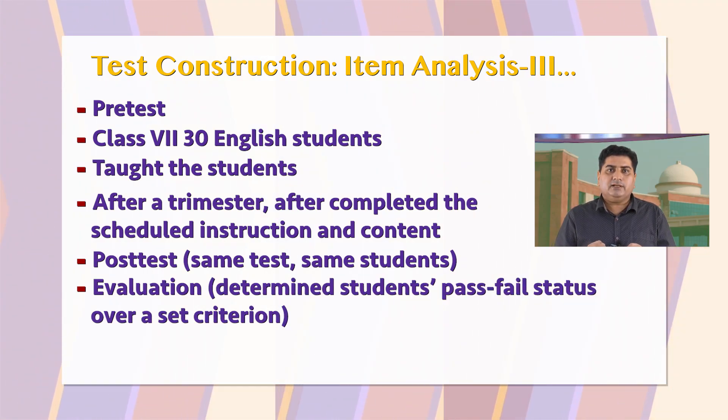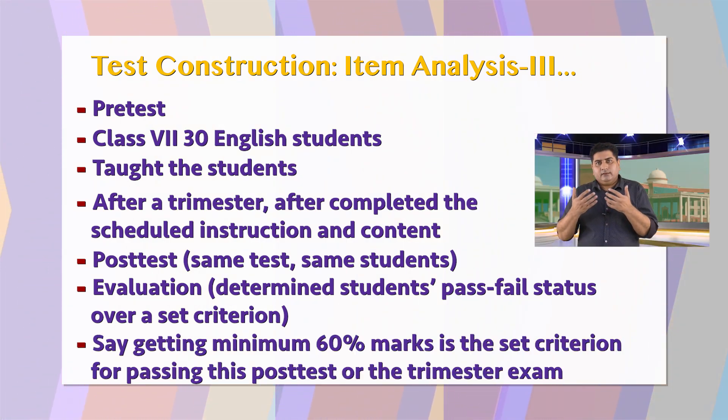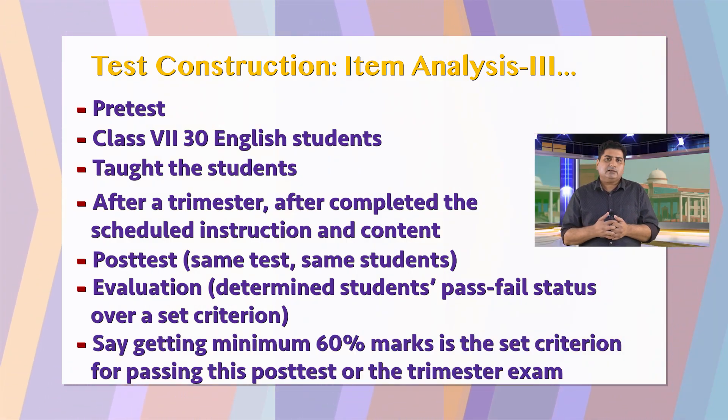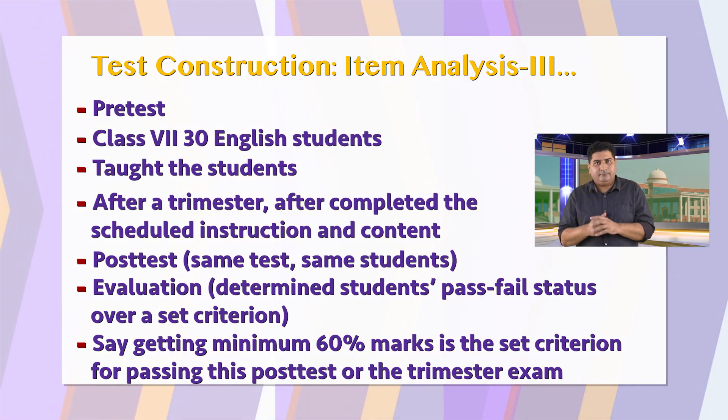The sample of students on which the test has been administered as pre-test and post-test is the same. After the post-test, while scoring the students, we also completed the task of evaluation and determined students' pass-fail status over a set criterion. Getting a minimum of 60% marks is the set criterion for passing this post-test or the trimester exam. With the help of this data of pre-test and post-test, we will carry out the item analysis for this criterion reference test.